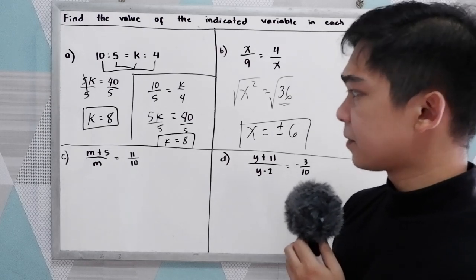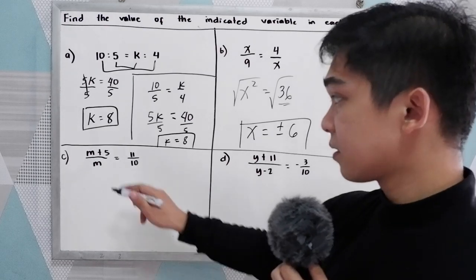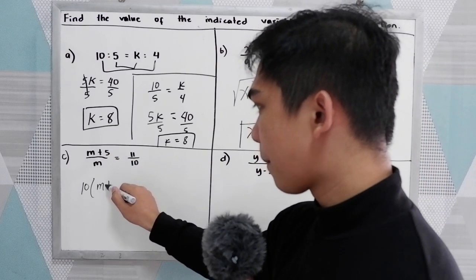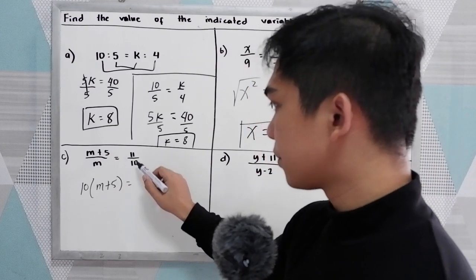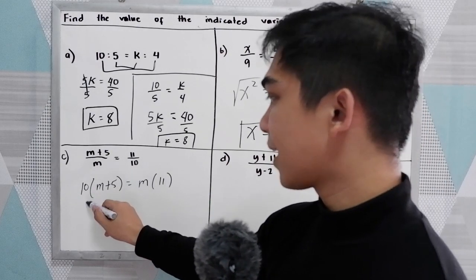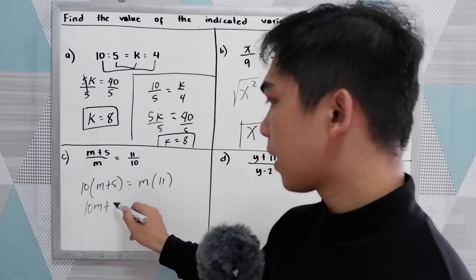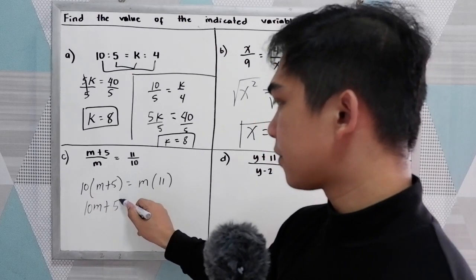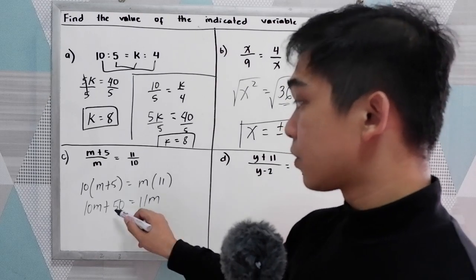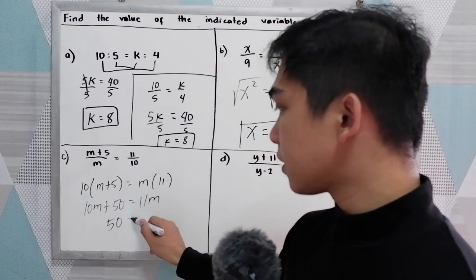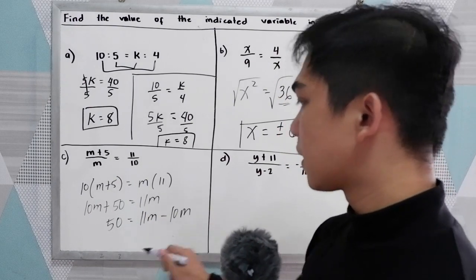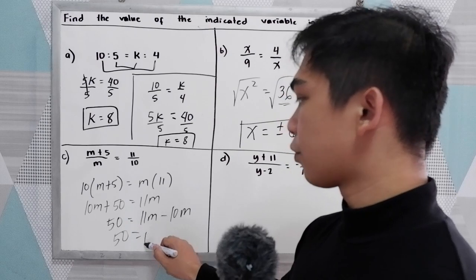Next, letter C — same process, cross multiply. We have 10 times M plus 5 equals M times 11. So 10M plus 50 equals 11M. Moving 10M to the right: 50 equals 11M minus 10M, so 50 equals M.